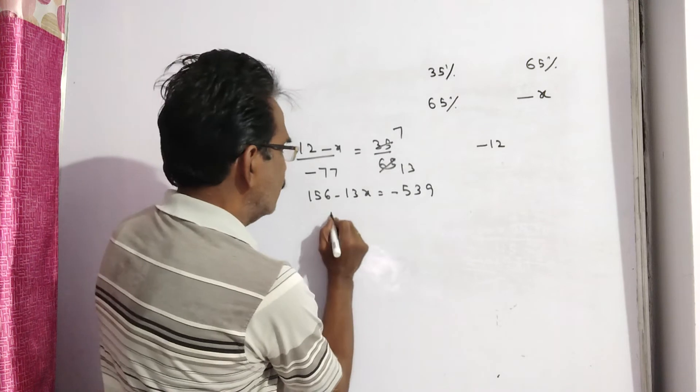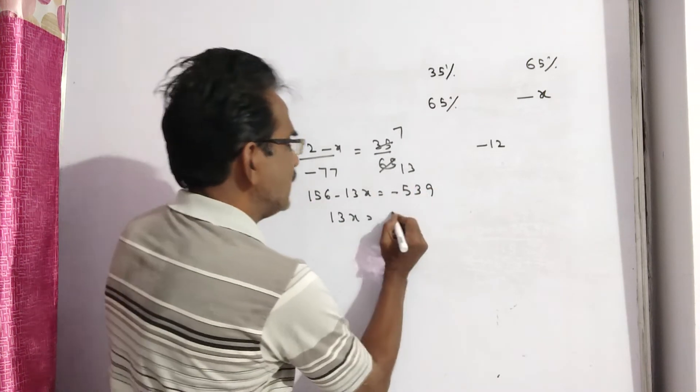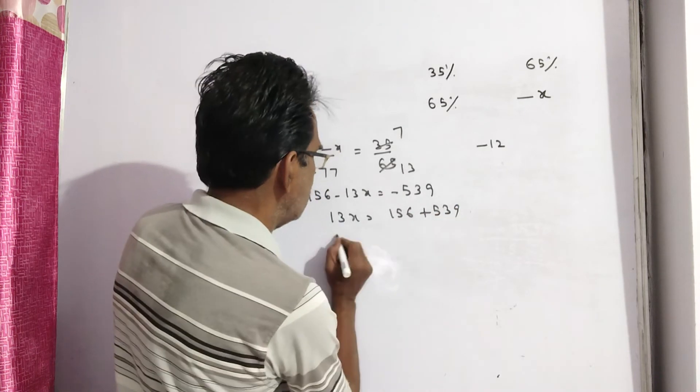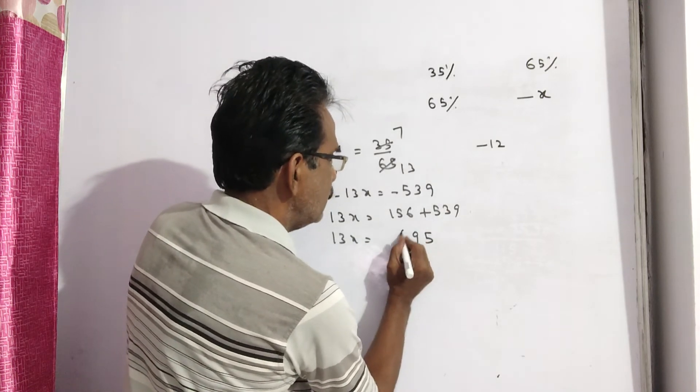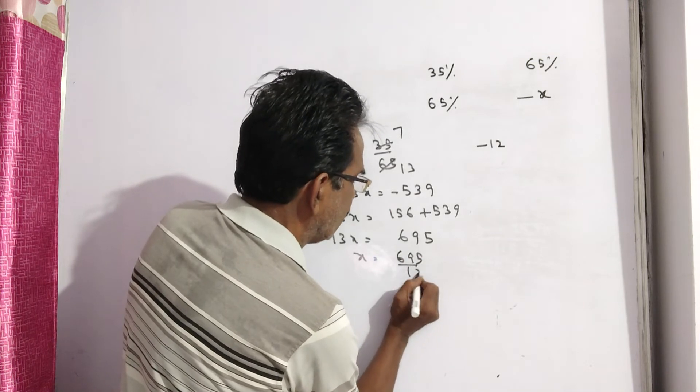Now 13x is equal to 156 plus 539. That results into, that is equal to 695. Now 13x is equal to 695 by 13.